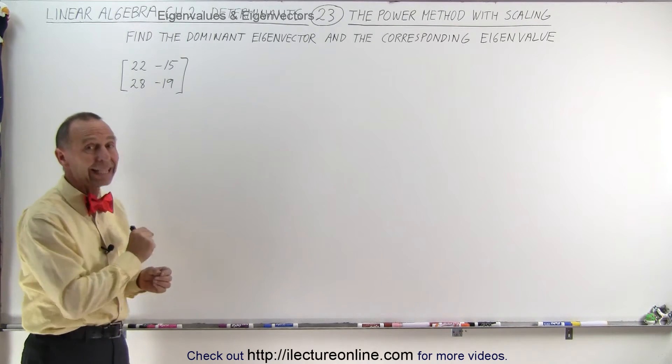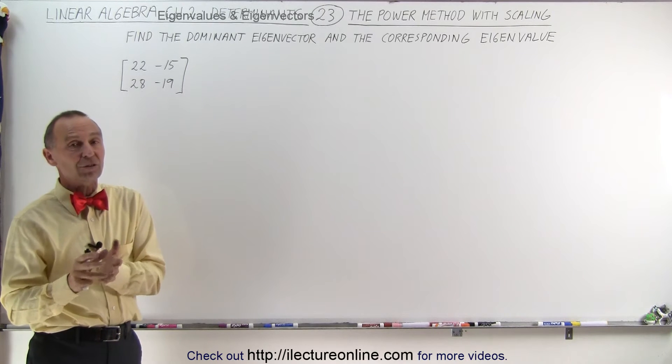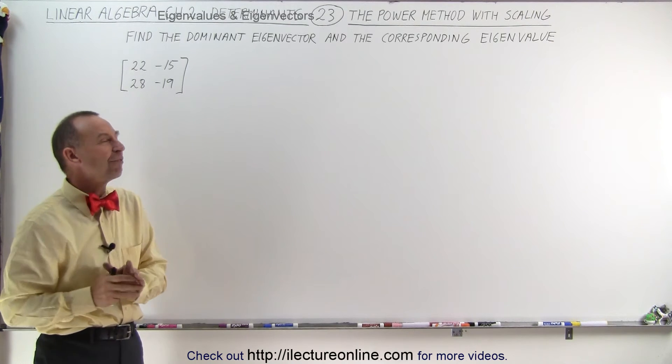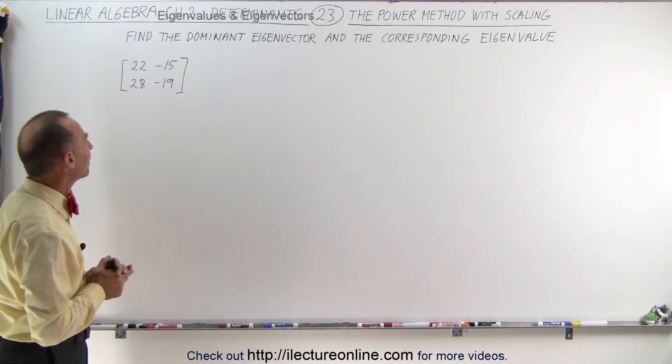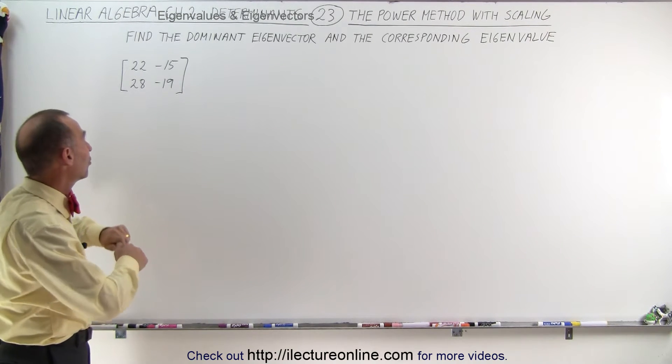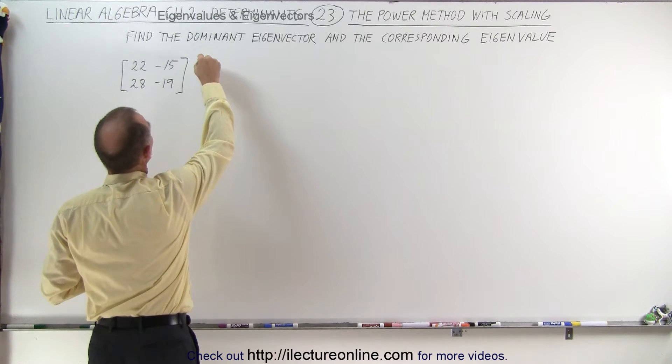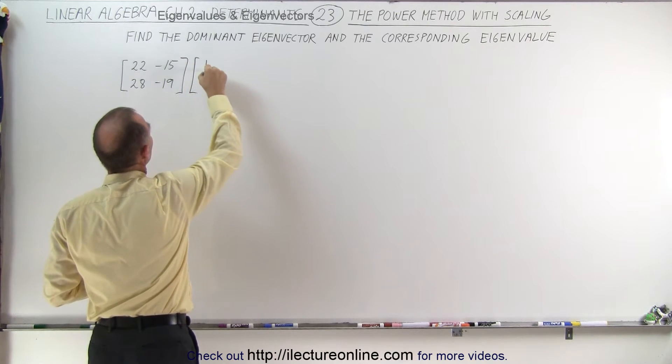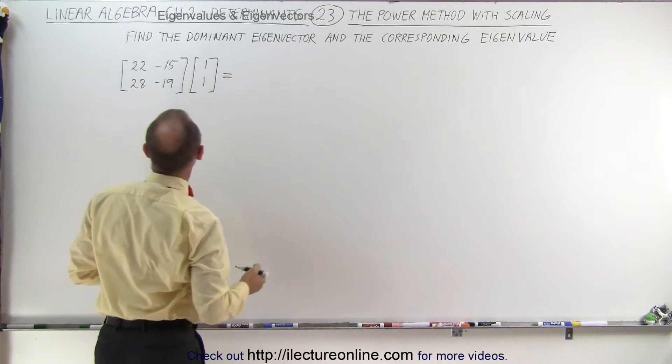But if we use what we call scaling then it becomes a lot easier to see what the eigenvector appears to be becoming. So again we approach it with the same methodology. We're going to multiply this times the presumed eigenvector. Let's start with 1 and 1 and let's see what we get.